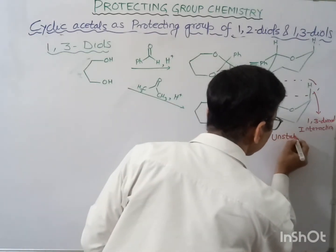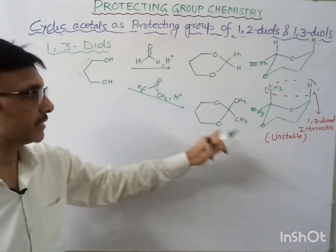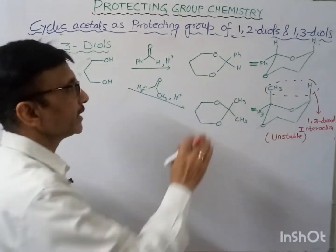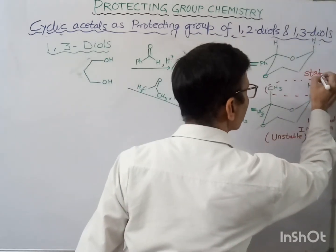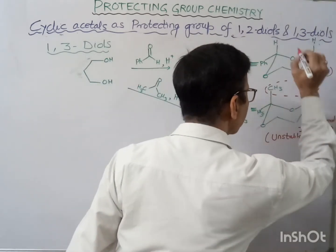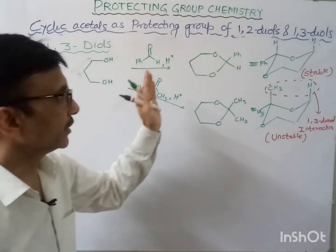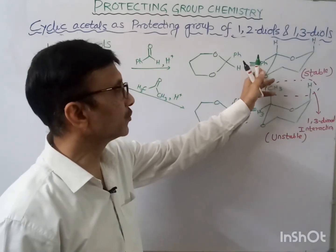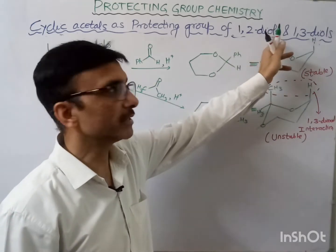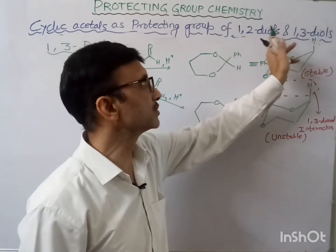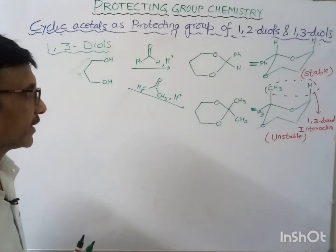So that's why, when using acetone, the product is unstable due to the 1,3-diaxial interaction. When using benzaldehyde, no such 1,3-diaxial interaction is seen, making it stable. The phenyl group comes at the equatorial position being bulkier, and the hydrogen comes at the axial position, so we will not see any 1,3-diaxial interaction. This is the reason.